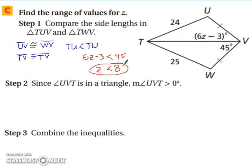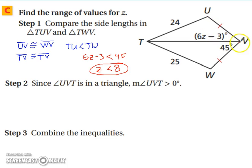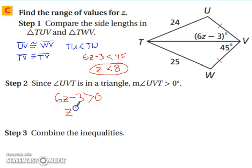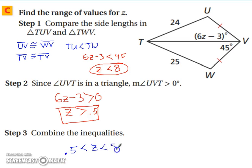A lot of people will stop there, but you're missing a piece. You also have to make sure you don't include negative numbers — if Z has to be less than 8, negative 700 is less than 8, but plugging in negative 700 might make this angle not a possible angle. The angle has to be greater than 0, so set 6Z minus 3 greater than 0. Add 3 to both sides and divide by 6: Z has to be larger than 0.5. Combining both inequalities, Z is greater than 0.5 but less than 8.